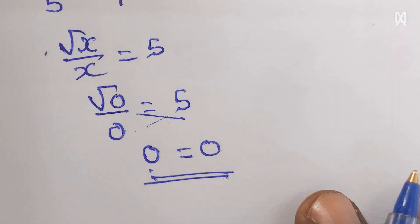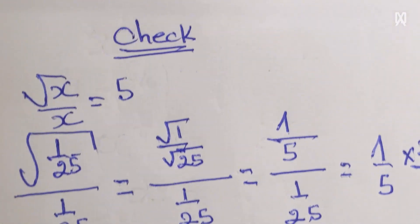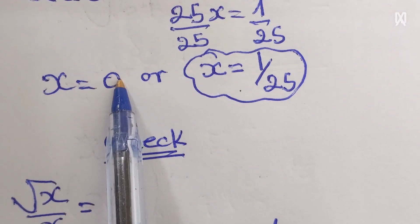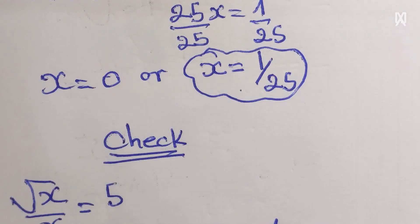So our solution is correct. This means that our x is equal to 0 or x is equal to 1 over 25. Thanks for watching. Don't forget to share and subscribe. We'll see you next time.